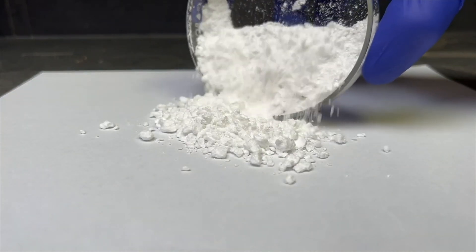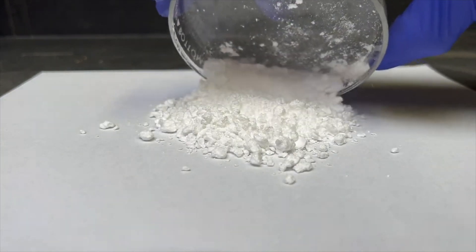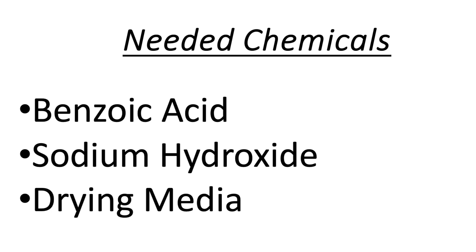In a previous video I produced benzoic acid from Tylenol. Benzoic acid will serve as our starting point. The chemicals needed for this reaction are sodium hydroxide, benzoic acid, and some kind of drying media, such as molecular sieves or anhydrous sodium sulfate.